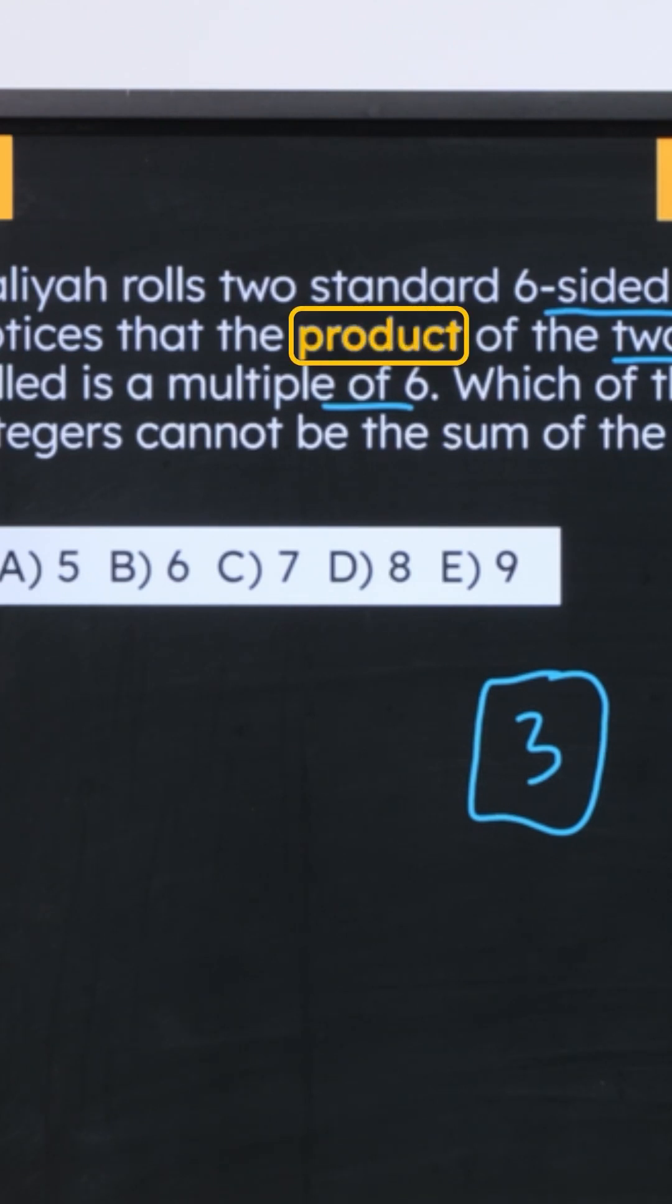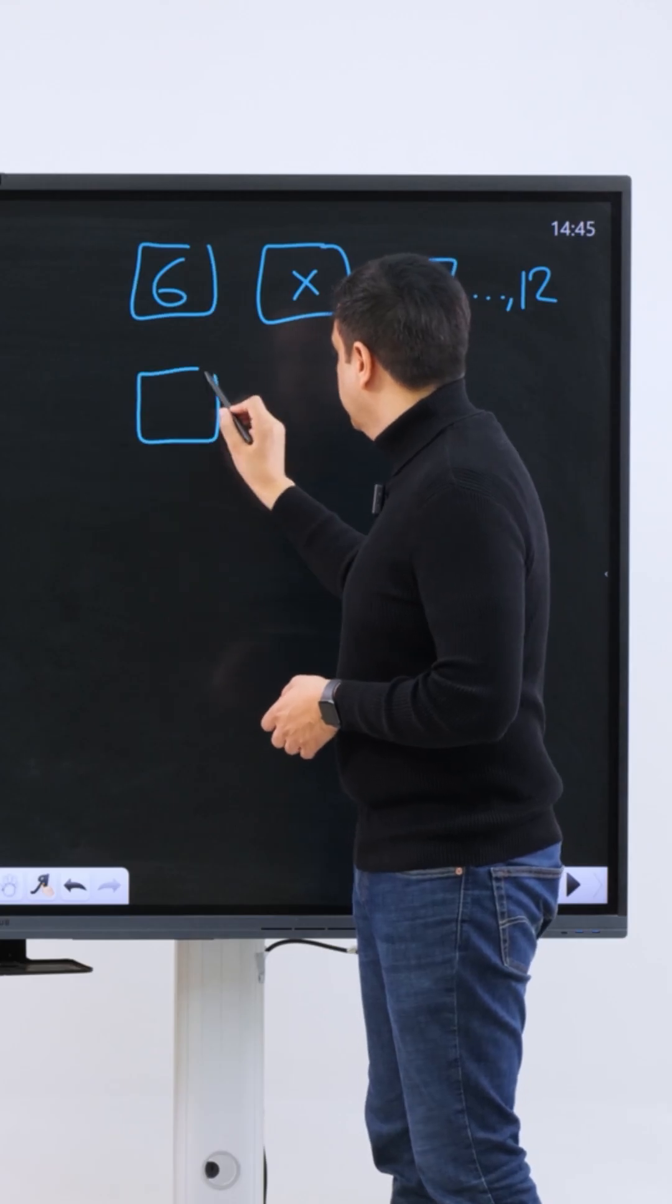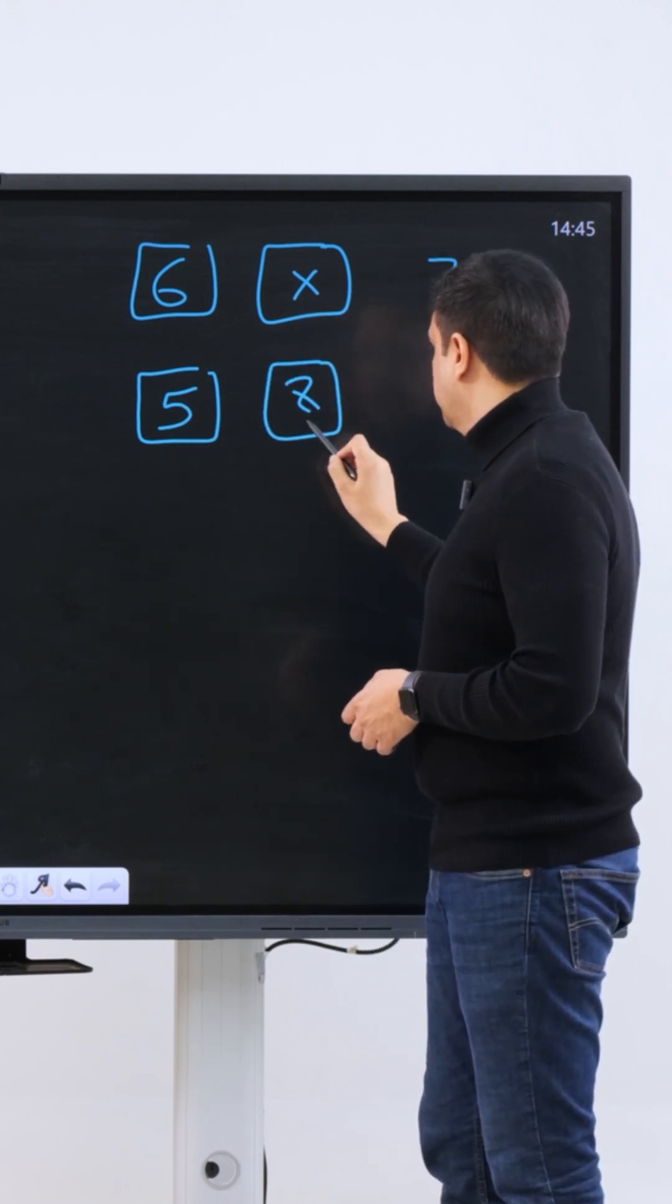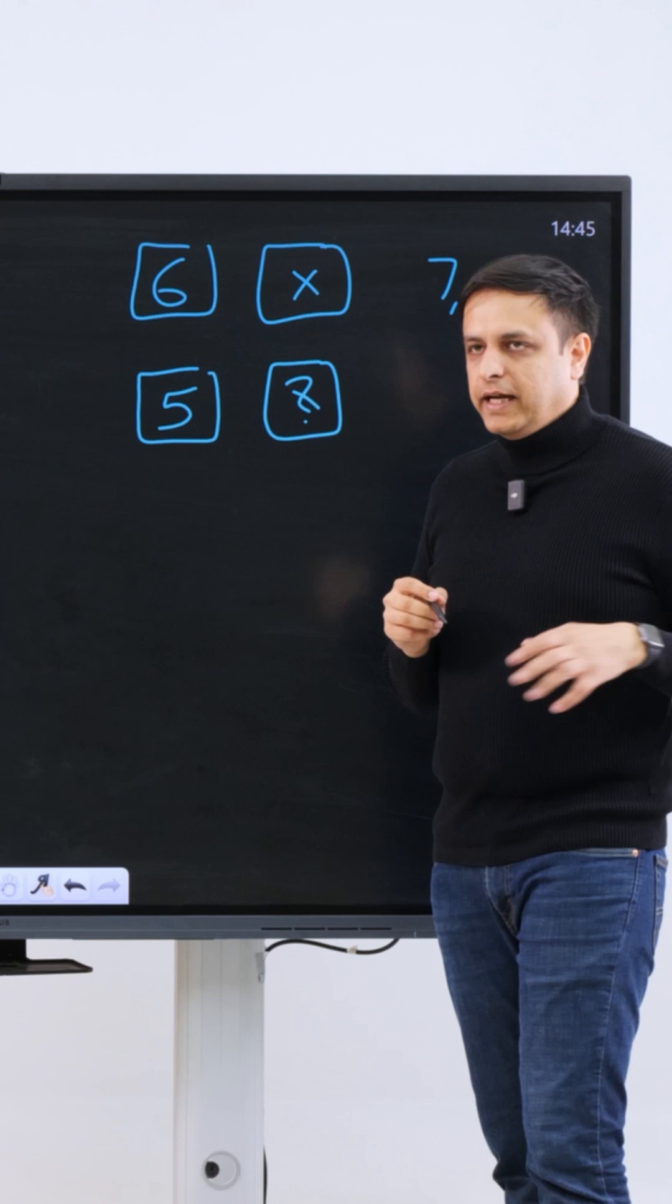Now what are other cases where the product is a multiple of six? So if we have five on the first die, then nothing works on the second die. You put anything here, you will not get a multiple of six.